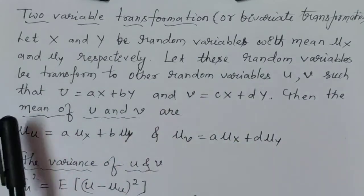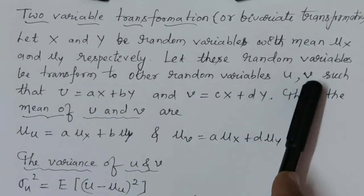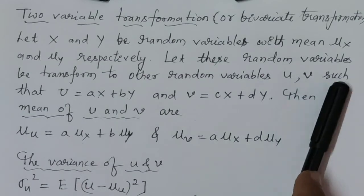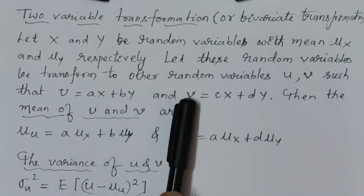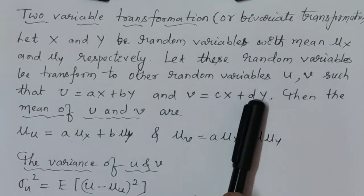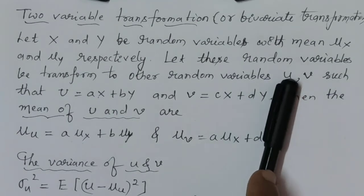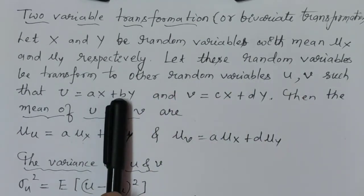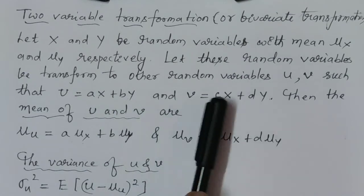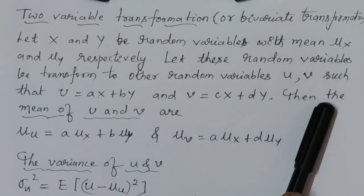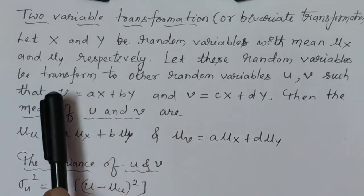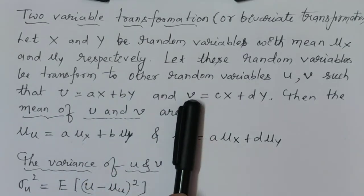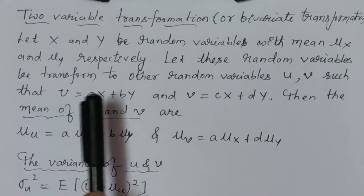Let these random variables be transformed to other random variables u and v, such that u is equal to ax plus by, and v is equal to cx plus dy. We can then find the mean value of u, mean value of v, variance of u, variance of v, and covariance of u and v.